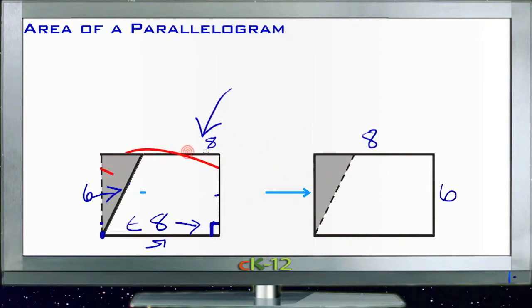So all you need to know for the area of a parallelogram is that the area is the base times the height, and that the perimeter is two times the base plus two times the height, same as the rectangle.